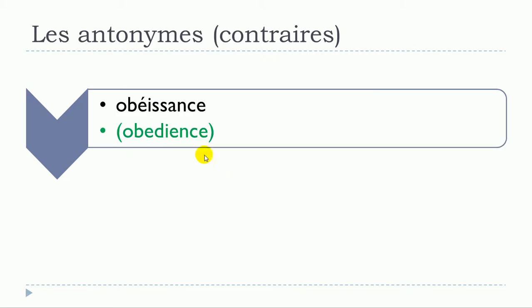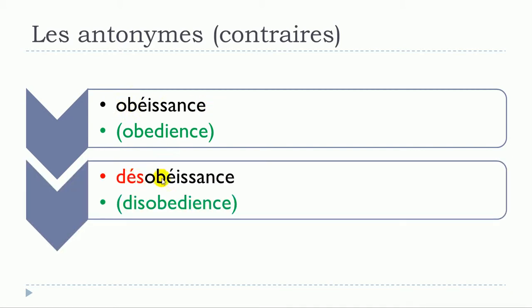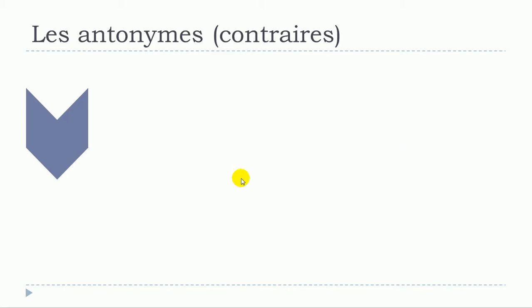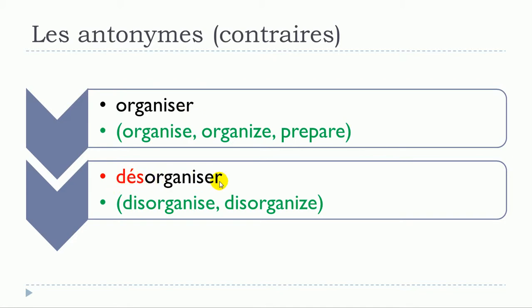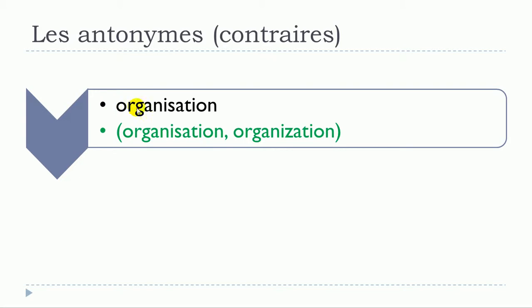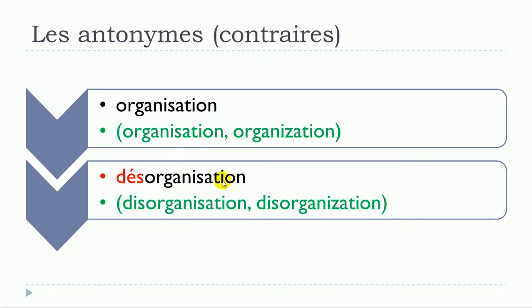The noun obéissance gives us désobéissance. Then organisé gives us désorganisé, and the noun organisation gives us désorganisation.